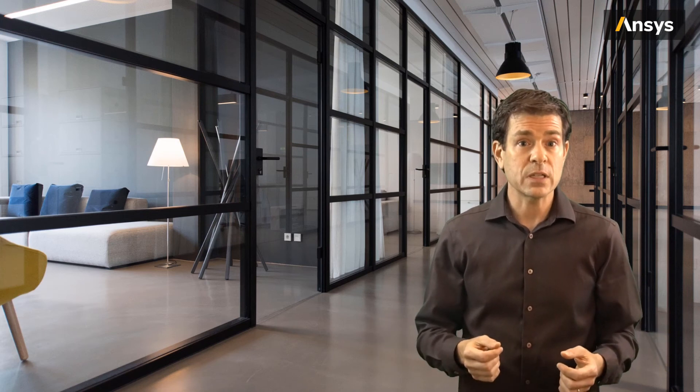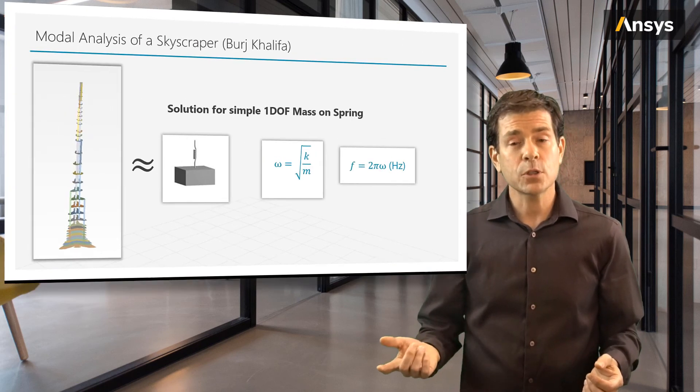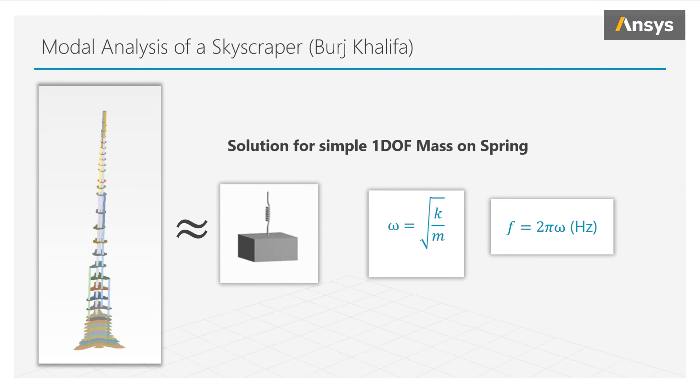Now intuitively, does it make sense a skyscraper has such low natural frequencies, while a tuning fork has relatively much higher natural frequencies? If we think of the skyscraper in terms of a single degree of freedom system, and again use the simple equation of omega equals square root of k over m, we know that the skyscraper has a relatively high mass compared to the tuning fork, and due to the slenderness of the skyscraper, it has a relatively low lateral stiffness. This combination results in a typically low fundamental first frequency of large civil engineered structures, like tall skyscrapers.